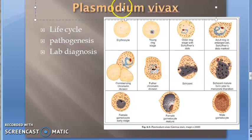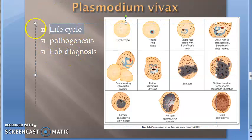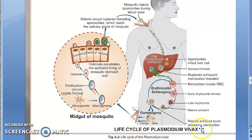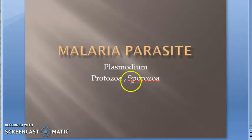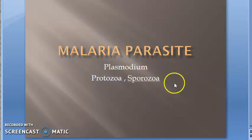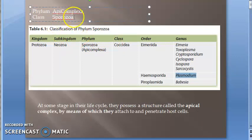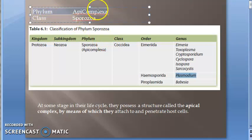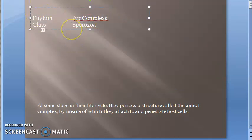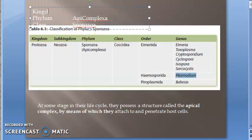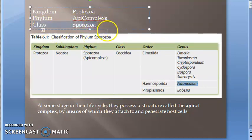In this video, let us look at the Plasmodium vivax life cycle. This diagram is something you will have to draw if asked in the exam. As a brief review, malaria is a disease caused by the Plasmodium parasite, which comes under Kingdom Protozoa, Phylum Apicomplexa, Class Sporozoa, Genus Plasmodium.